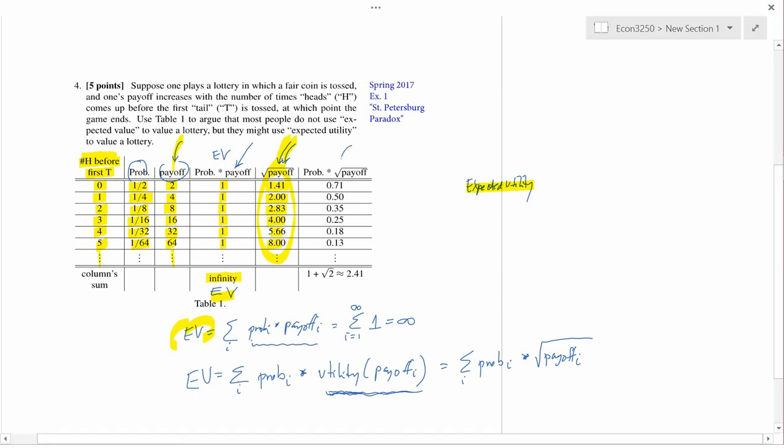The last column is the probability times the square root of the payoff. The probability is here, and the square root of the payoff is here. So this last column just multiplies those two columns together. For example, in the first row, the probability is one-half. The square root of the payoff is 1.41. If you multiply that together, you get 0.71. Second row, probability is a quarter. The square root of the payoff is two. Multiply a quarter times two, and you get a half. So each one of these is one of these. And then if you add them all up, you get 2.41.